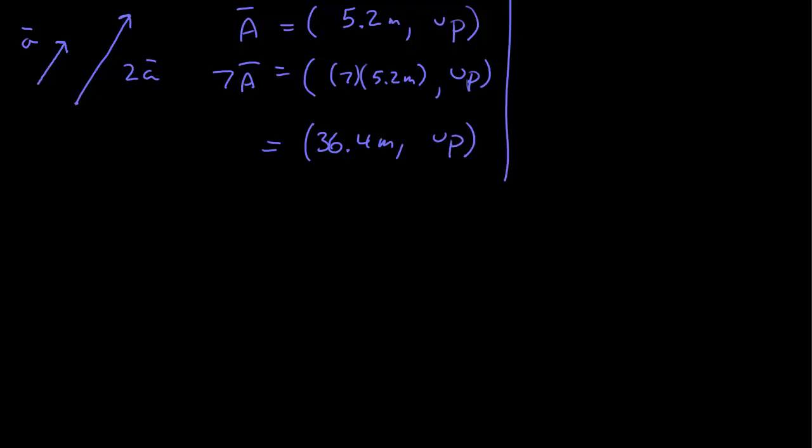For another example, if I have a vector r, which is 4 meters, we'll give that a direction to the left, and I have a scalar, which I'll call omega, that's the Greek letter omega, and it has 6, and its units is 1 over seconds, that turns out to be a frequency.